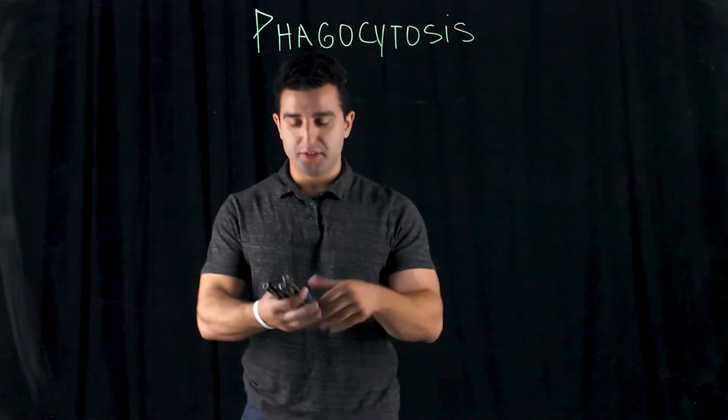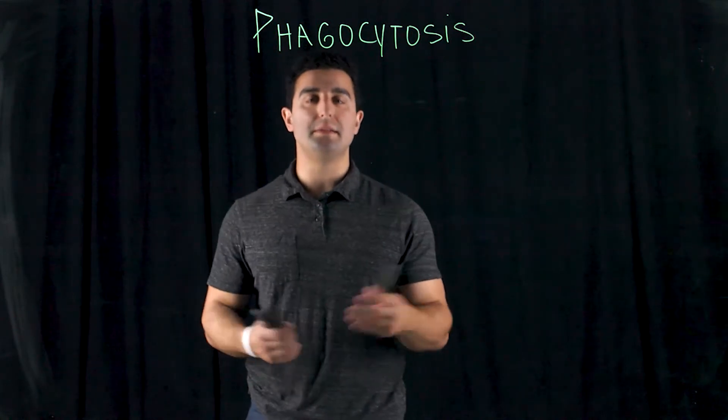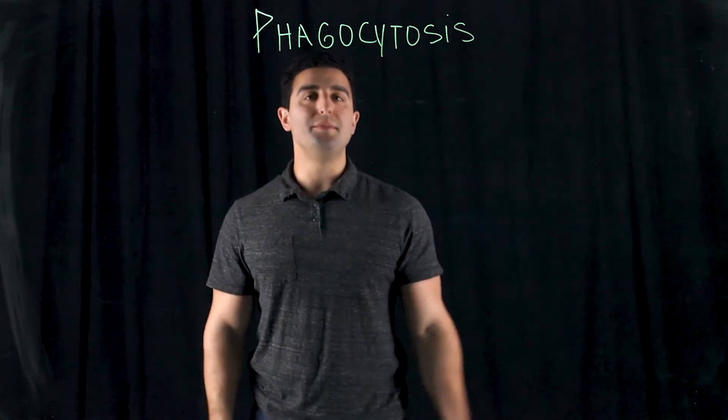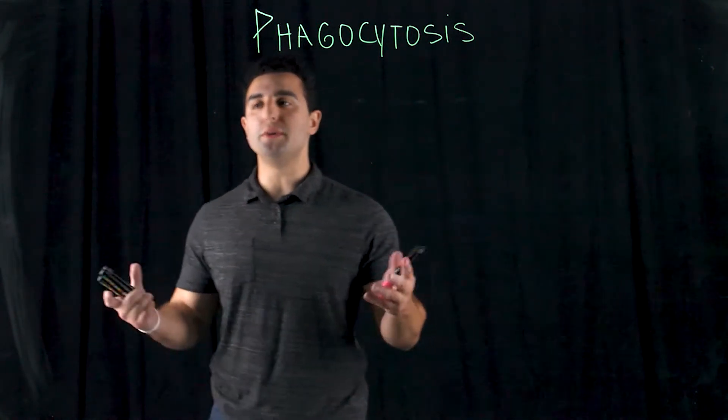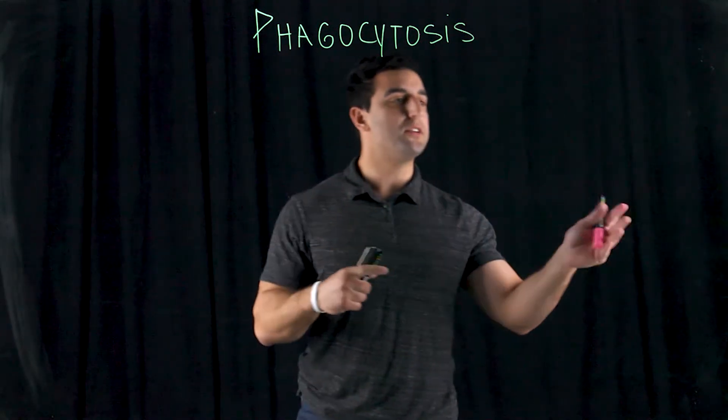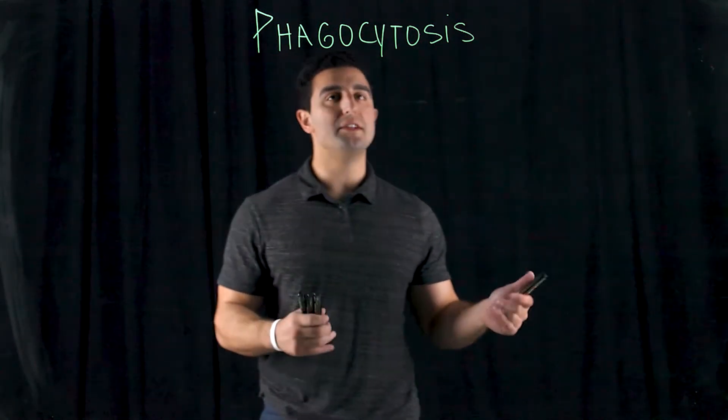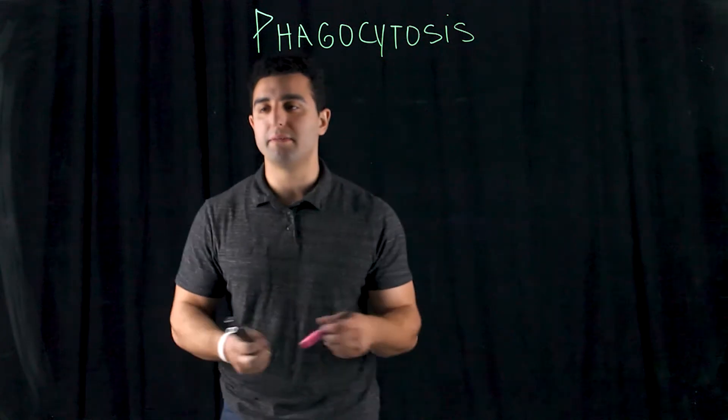All right, so now we're going to look at phagocytosis. Phagocytosis is basically cell eating. A lot of immune cells have this capability and they do it as they monitor throughout the body through their surveillance in order to keep the body safe.